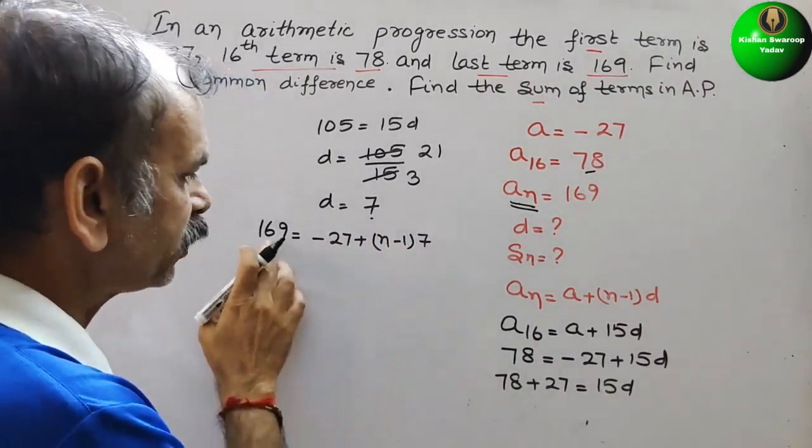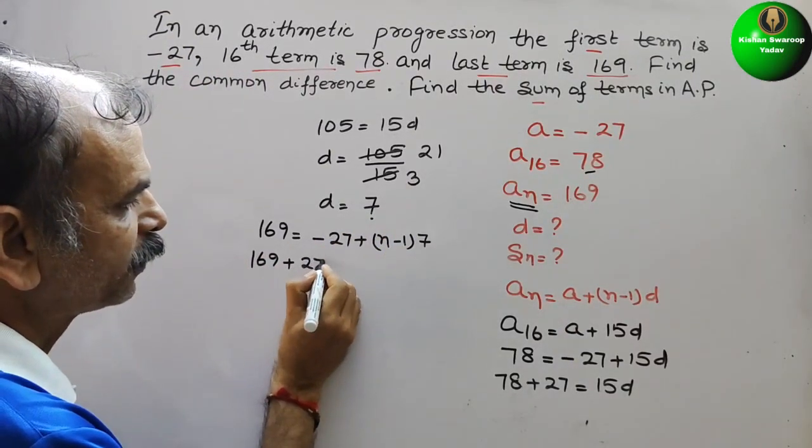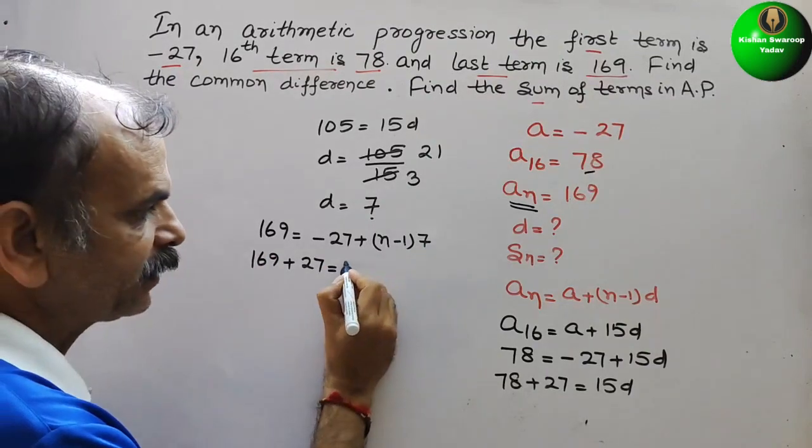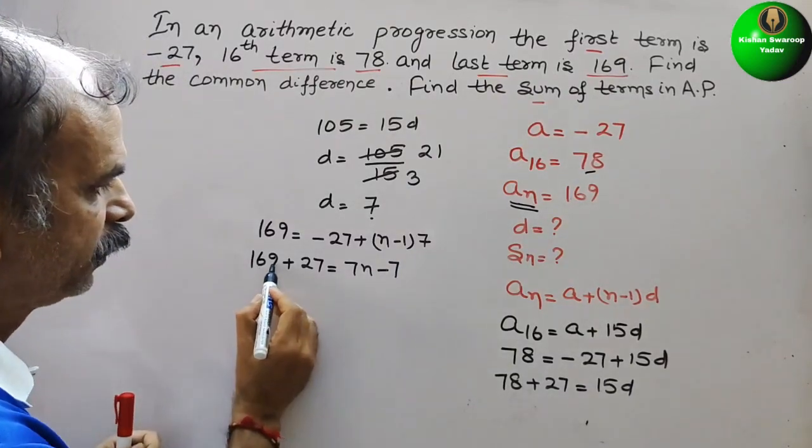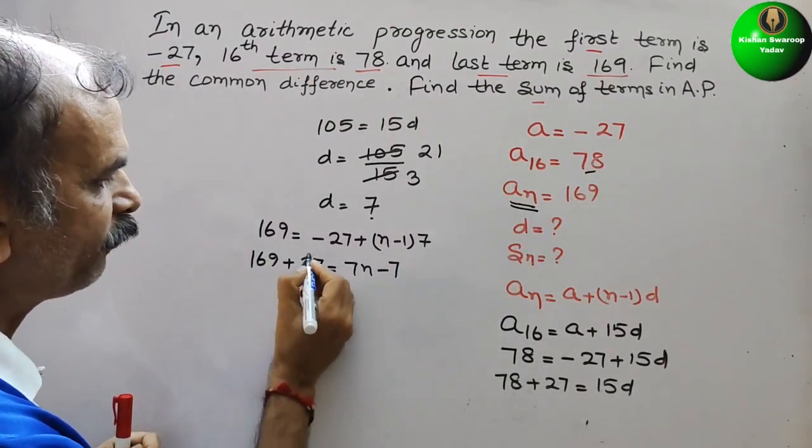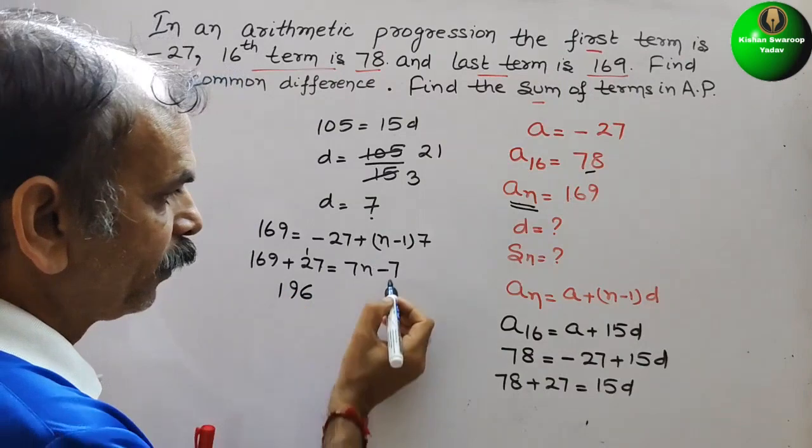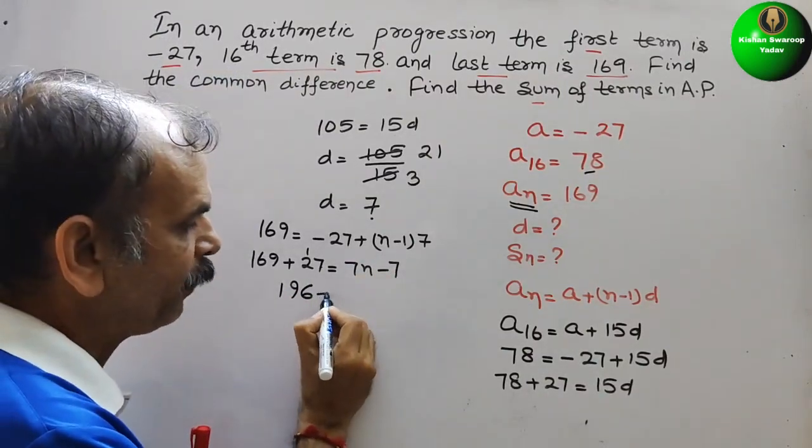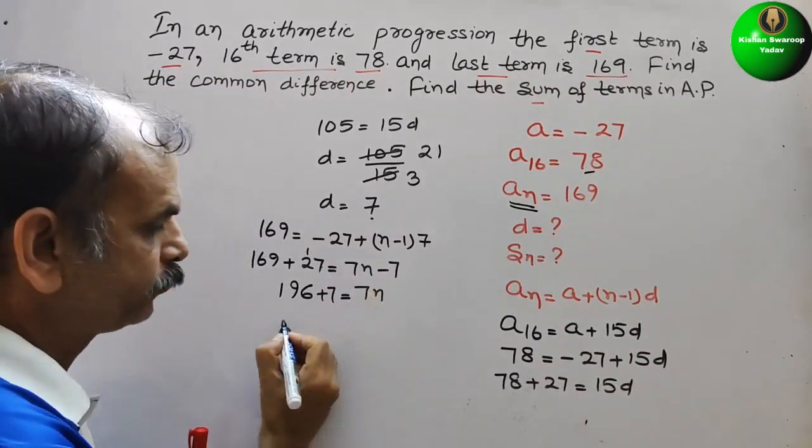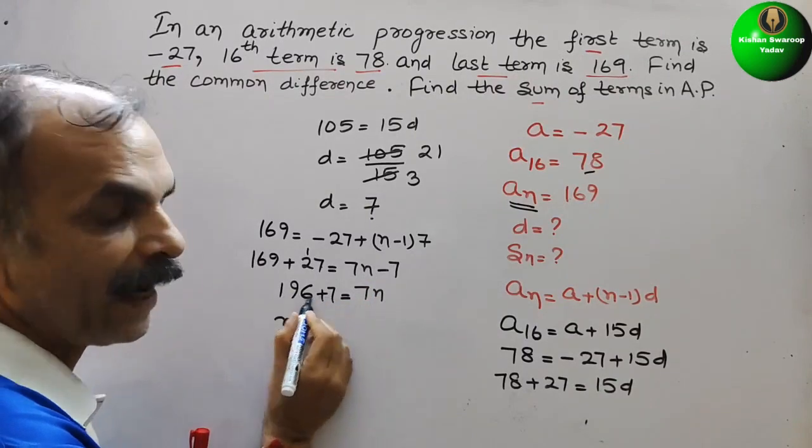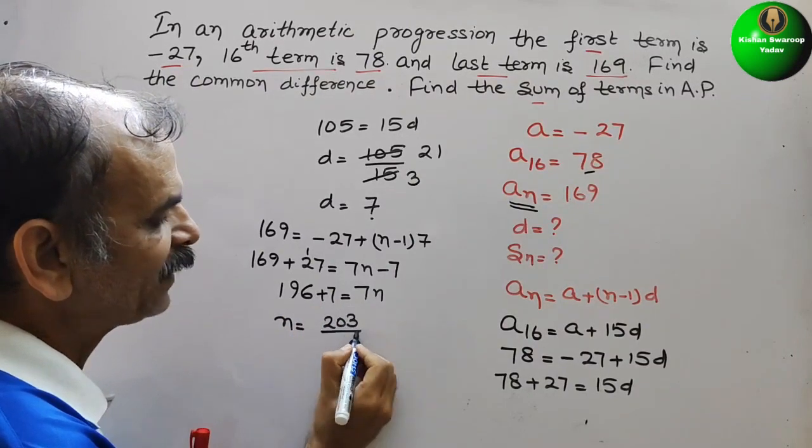Bring this minus 27 to this side. So here it will come 169 plus 27 equals N minus 1 times 7. So what is your N now? We can say just add this. So it will be 196 times 7N. By 7.